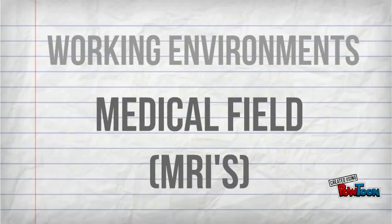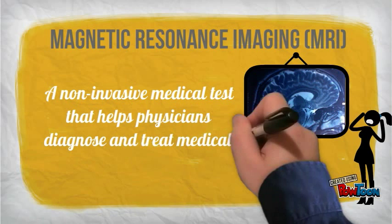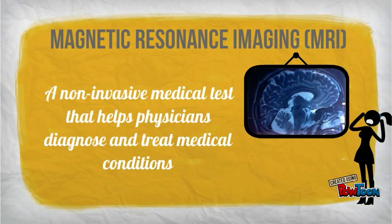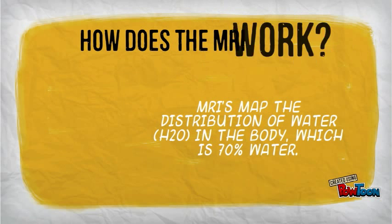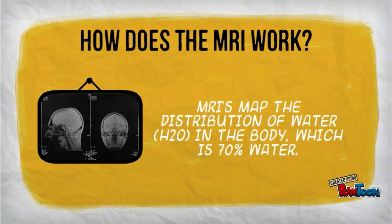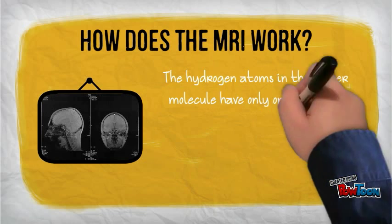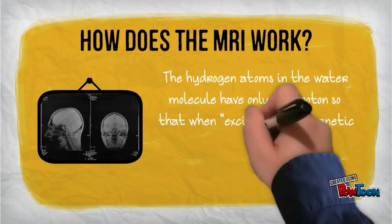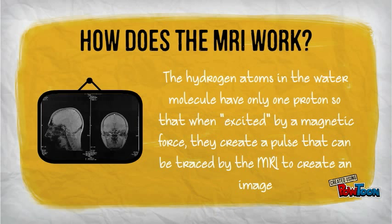One can also find trig functions in the medical field, specifically MRI machines. MRI stands for Magnetic Resonance Imaging. This machine is a non-invasive medical test that helps physicians diagnose and treat medical conditions. The MRI uses a powerful magnetic field, radio frequency pulses and a computer to produce detailed images of organs, soft tissue, bone and virtually all other internal body structures. The MRI maps the distribution of water in the body, which is 70% water. The hydrogen atoms in the water molecule have only one proton, so that when excited by a magnetic force they create a pulse that can be traced by the MRI to create an image.